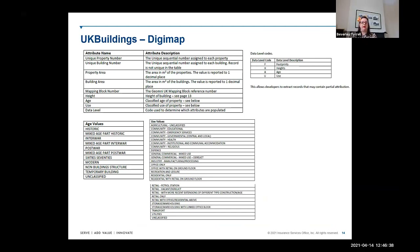The data includes building age — whether historic, interwar, modern, or temporary — as well as footprint, heights, and usage. This is a simplified subset of the full database available directly from Geomni, which carries a fee even for academic usage. However, through the Digimap portal it is freely available to institutions that have signed up to the service.